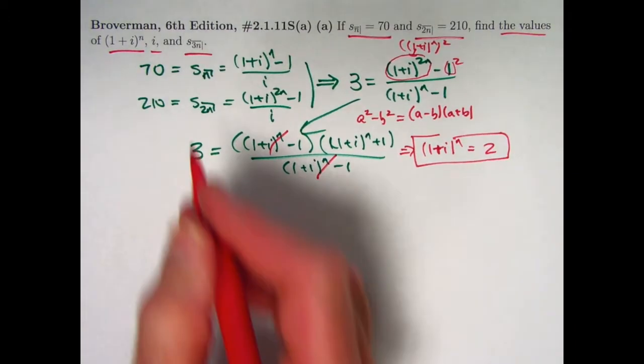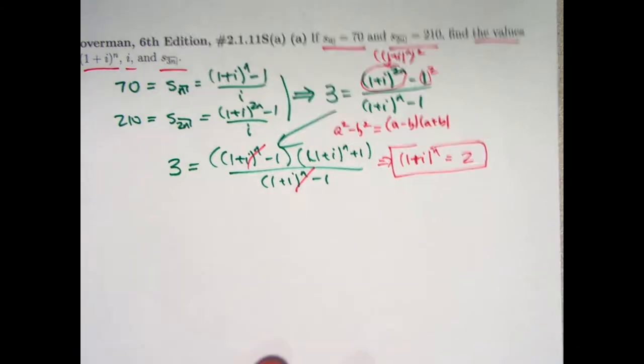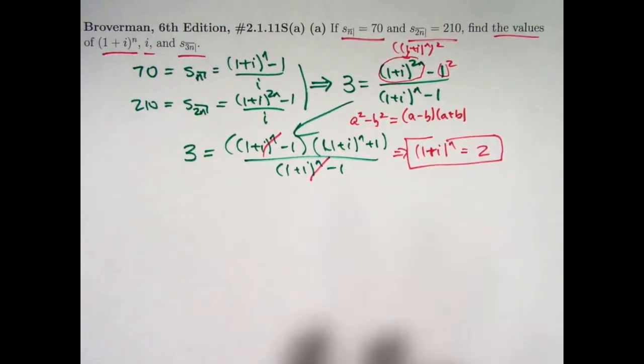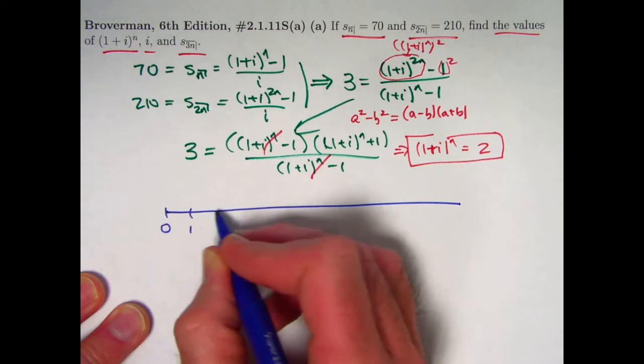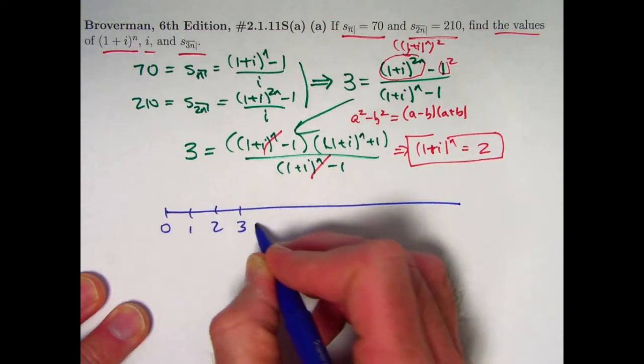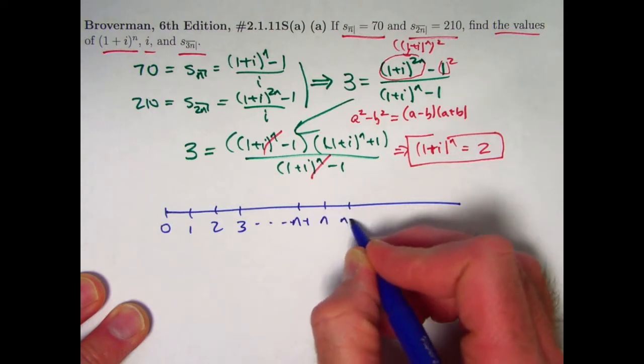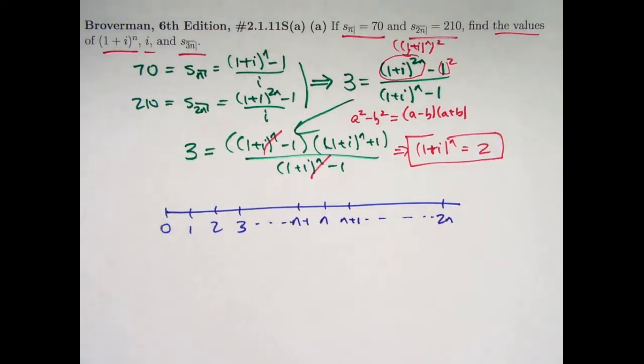So that is the answer to the first question: find (1+i)^n. Before I go on to solve for i and s_3n, let me solve for (1+i)^n in a different way using a different fundamental algebraic trick for actuaries. Let's think of this in terms of a timeline again. This will be something where it's not obvious that it's going to work at first, but this really is a fundamental skill that actuaries should have: thinking about these present value and future value equations involving annuities in terms of timelines.